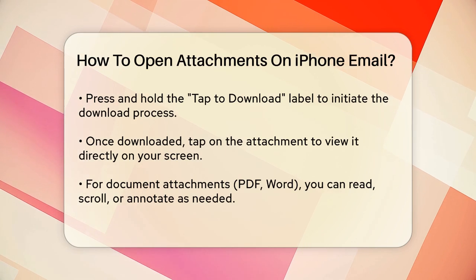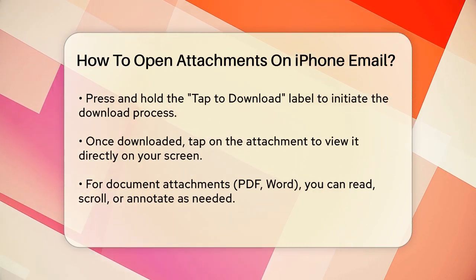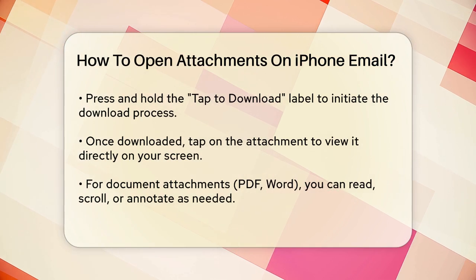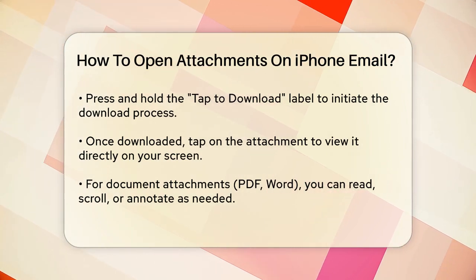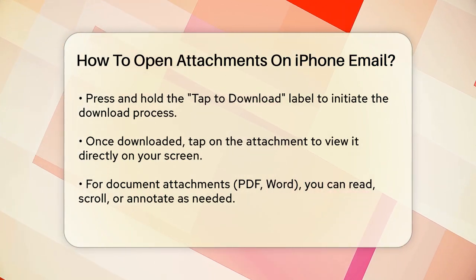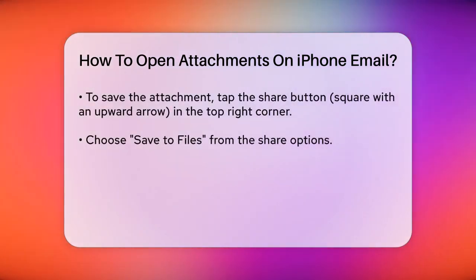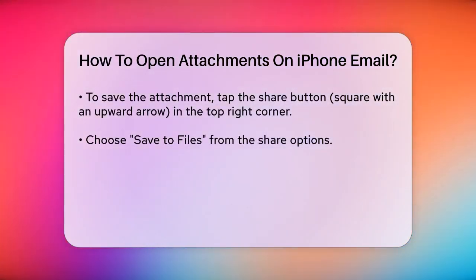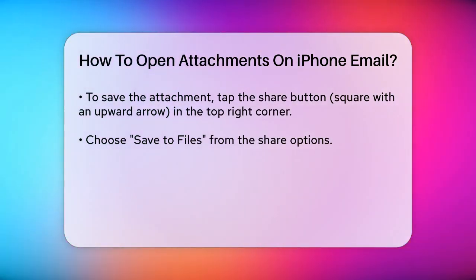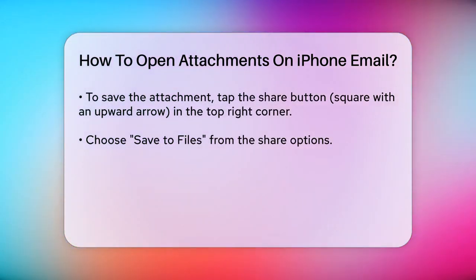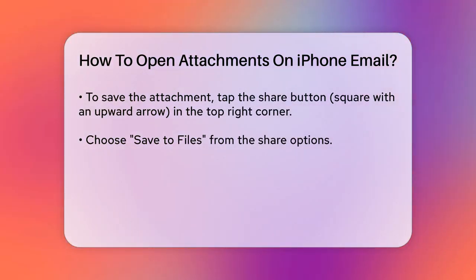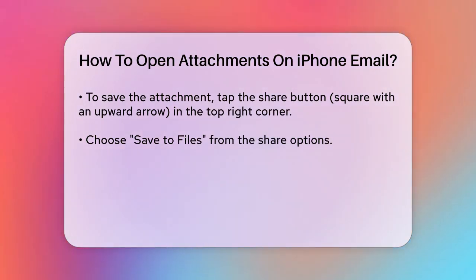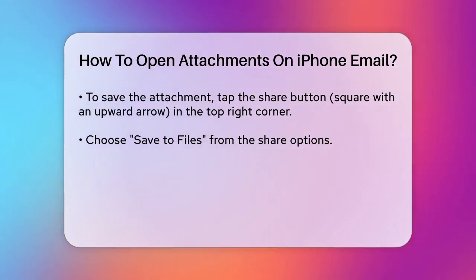If you want to save the attachment, you can do so by tapping the Share button, which looks like a square with an upward arrow. This button is usually located at the top right of the screen. After tapping the Share button, select 'Save to Files.' You'll then have the option to save the attachment to your iPhone or to iCloud Drive. Choose where you want to save it, and then tap Save at the top right of the screen.